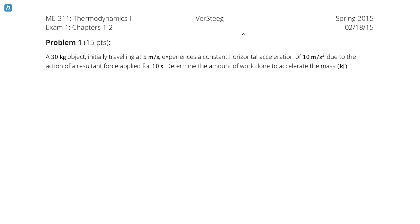Problem one: a 30 kilogram object initially traveling at 5 meters per second experiences a constant horizontal acceleration of 10 meters per second squared due to the action of a resultant force applied for 10 seconds. Determine the amount of work done to accelerate the mass in kilojoules.